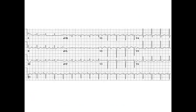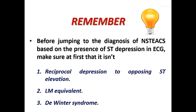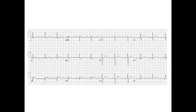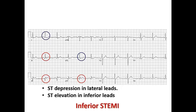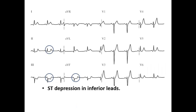Looking at this ECG, we can see ST segment depression in V4, V5, and V6, and also in leads II, III, and AVF — minimal ST depression in a patient presenting with chest pain, which may indicate non-ST elevation acute coronary syndrome. But before jumping to that diagnosis based on ST depression, make sure it is not reciprocal depression to opposing ST elevation, not a left main equivalent, and not DeWinter syndrome. For example, this ECG shows ST depression in lateral leads that appears to suggest non-STEMI — but there is actually ST elevation in inferior leads, indicating inferior STEMI.